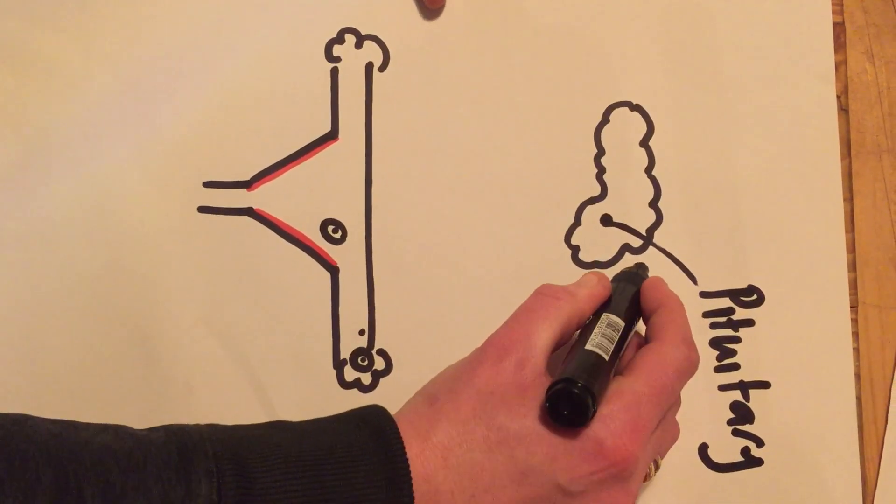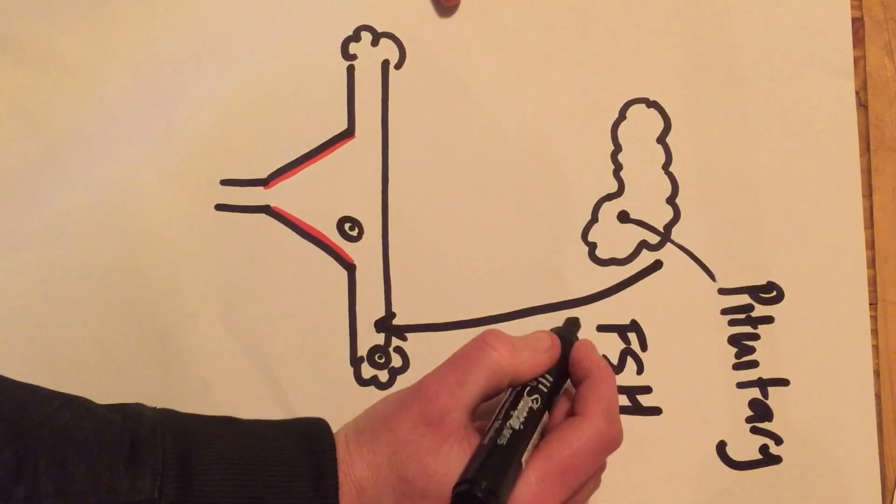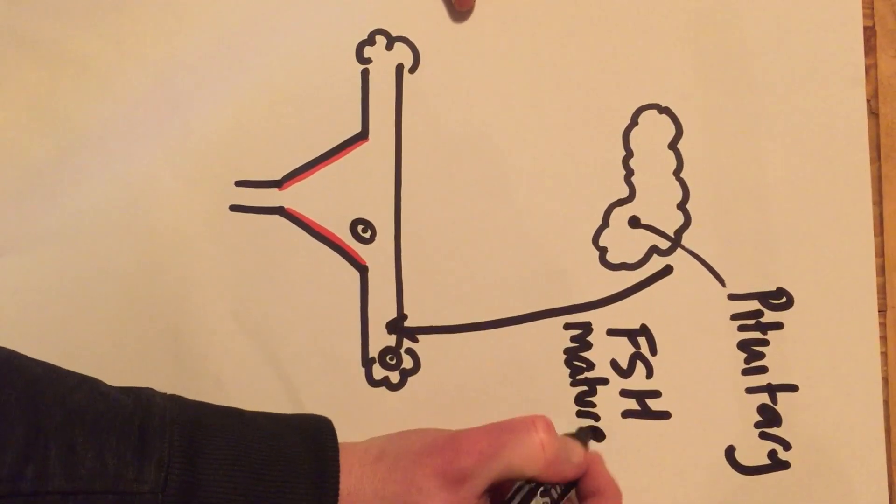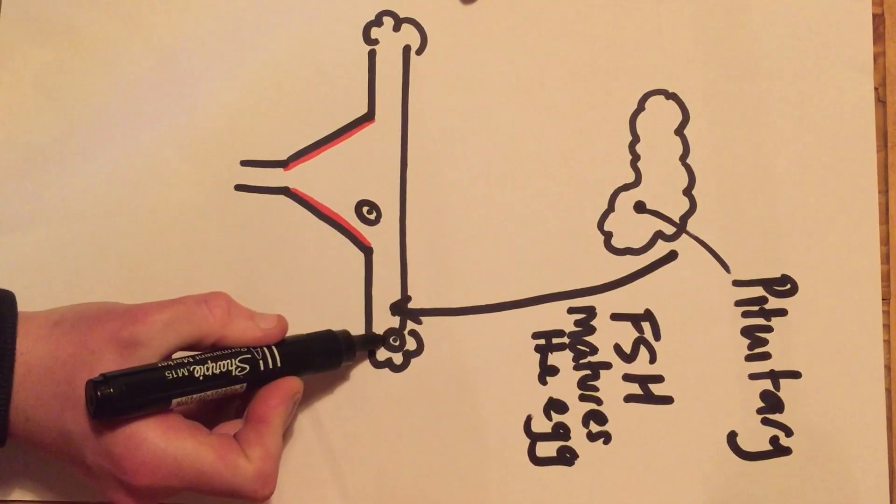So we're going to release the first hormone, which is FSH. FSH matures the egg, as we can see here.